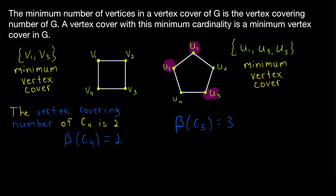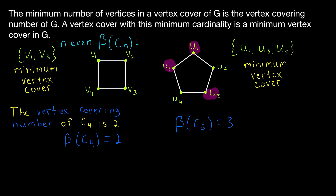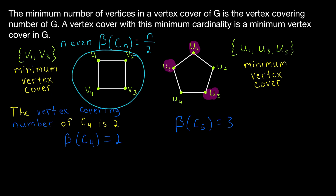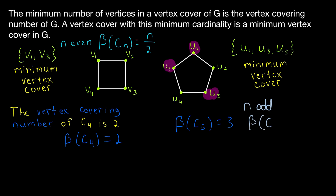In general, what do you think the vertex covering number of a cycle graph is? Let's first consider cycle graphs with an even number of vertices. Remember that every cycle graph is 2-regular, so every vertex covers two edges. A cycle graph has as many edges as it has vertices. So if it has an even number of vertices and each vertex covers two edges, then all we need is half the total number of vertices to cover all the edges. Looking at C4, there are four vertices, four edges, and each vertex covers two edges, so we only need two vertices — half of the total.